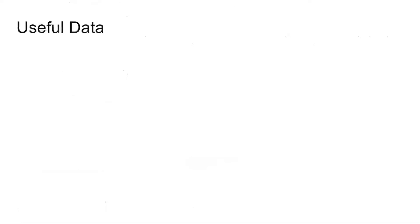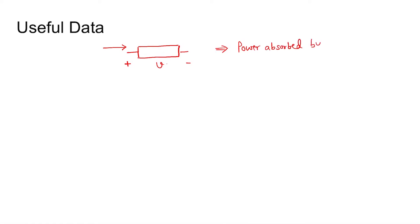The useful data required to solve this question: if you have a circuit element with voltage across it marked as plus V, and the current is entering into the plus terminal, that means power is absorbed by the element. Generally in electrical circuits we denote this absorbed power as positive power.